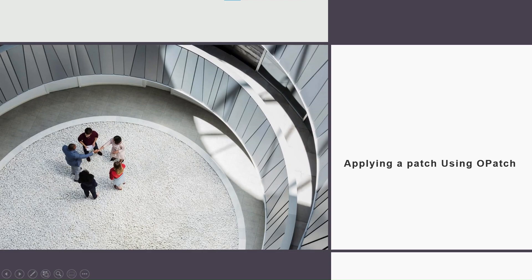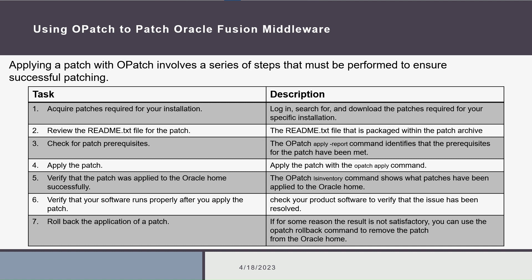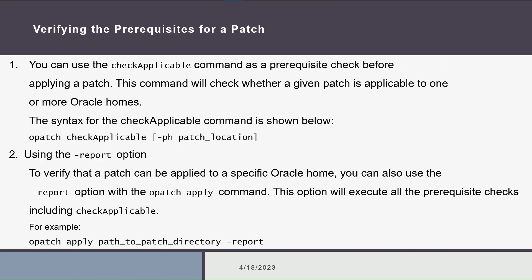The last step in our tutorial is to apply the required patch using the OPatch utility by doing several tasks. We have already completed the first three tasks, so we will start with task number four, which is applying the patch, then verifying that the patch was applied successfully and the software runs properly. If the patch is not applied successfully, we can use the opatch rollback command to remove the patch. Before using the opatch apply command, let's check if this patch is applicable to our Oracle home using the opatch check-applicable command or the opatch apply-report command.